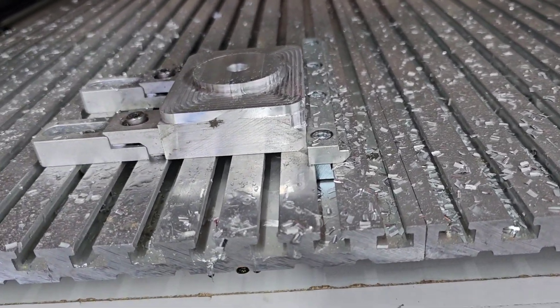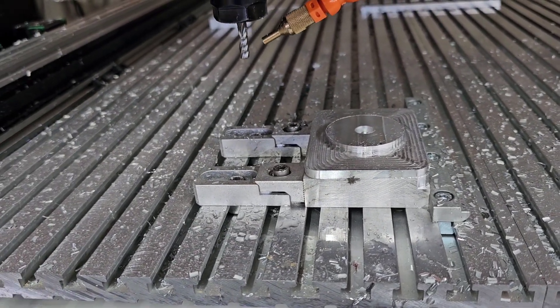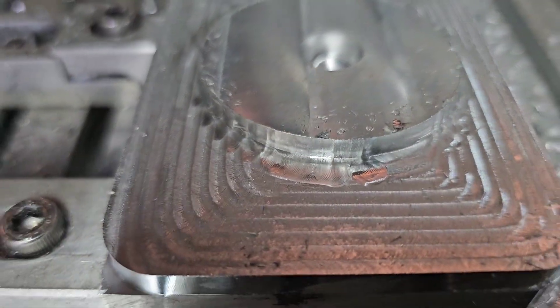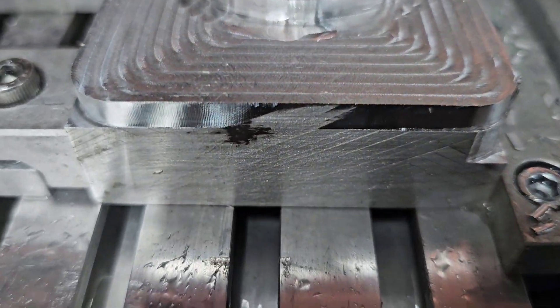Cool thing about the Masso is that we can just jump to line 271 or 2071 and get right back into it, but while it's humming, let's go ahead and have a look. So that's an adaptive rough.